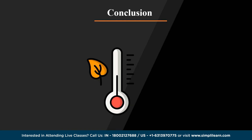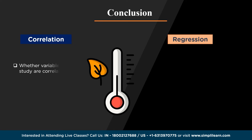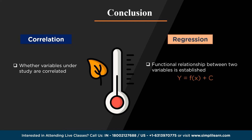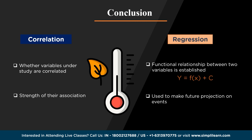We can conclude that there is a big difference between correlation and regression, although these are studied together. Correlation is used to study whether the variables under study are correlated, and is used to establish the strength of the association between two variables. Whereas regression is used to establish a functional relationship between two variables — the equation is of the form y = f(x) + c — and is used to make future predictions on any given event.